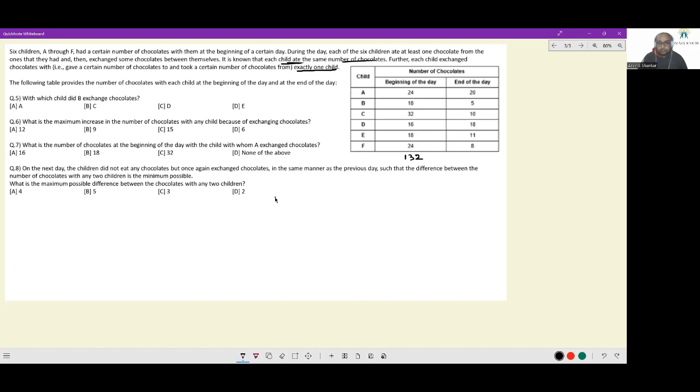And some of them got eaten up. How many chocolates are left at the end of the day? 20 plus 5 is 25, 25 plus 10 is 35, 35 plus 18 is 53, 53 plus 11 is 64, 64 plus 8 is 72.